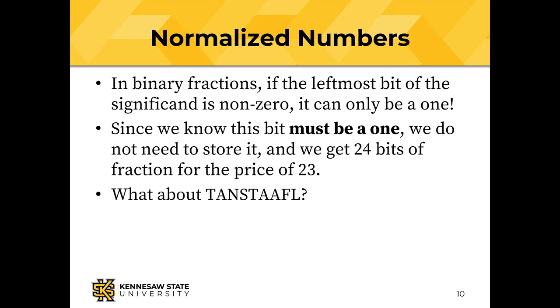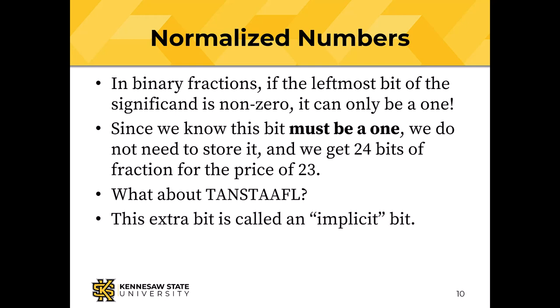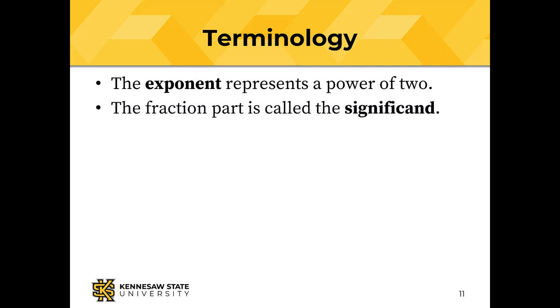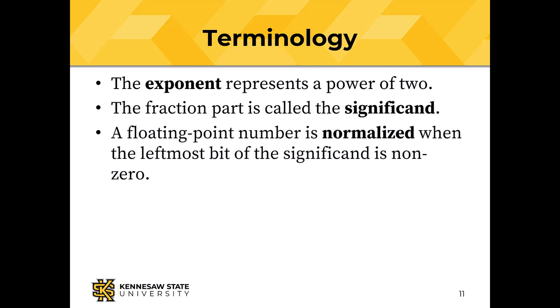What about no such thing as a free lunch? That extra bit is not free — it takes computational work to normalize the number. The extra bit is called an implicit bit, and the normalized number is represented as having an implicit bit to the left of the binary point and the bits of the stored significand to the right. In other words, the binary significand of a normalized number will be greater than or equal to 1 and less than 2. To summarize: the exponent represents a power of 2, the fractional part is called the significand, and a floating point number is normalized when the leftmost bit of the significand is non-zero.